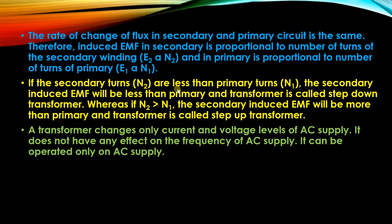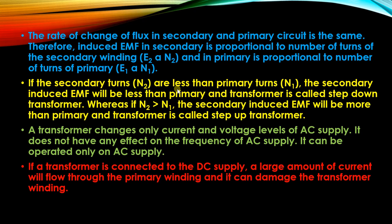The transformer changes only the level of current or voltage according to whether it is step-up or step-down. If a transformer is connected to a DC supply, a large amount of current will flow through the primary winding and can damage it. This is a very important point: the transformer is an AC device and should never be operated on DC supply, as it will burn the primary winding.